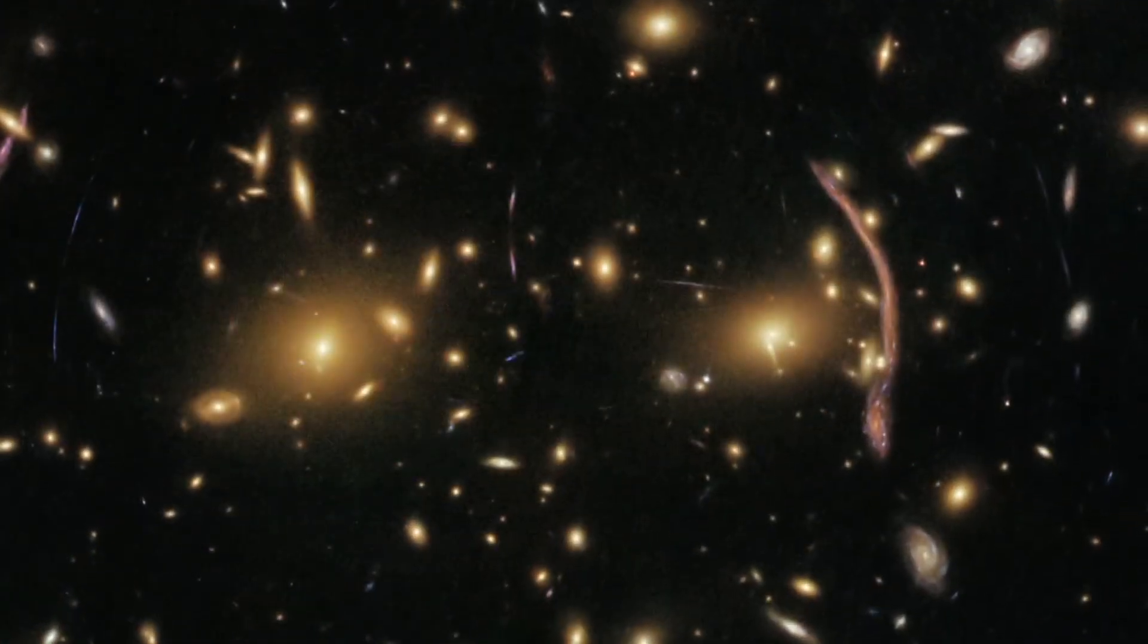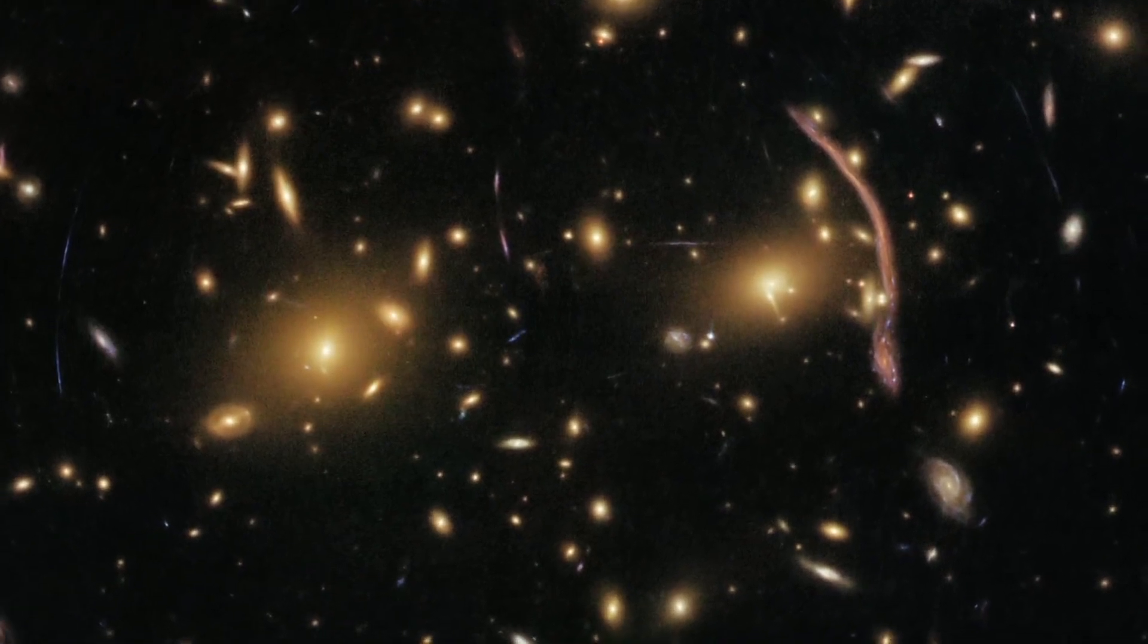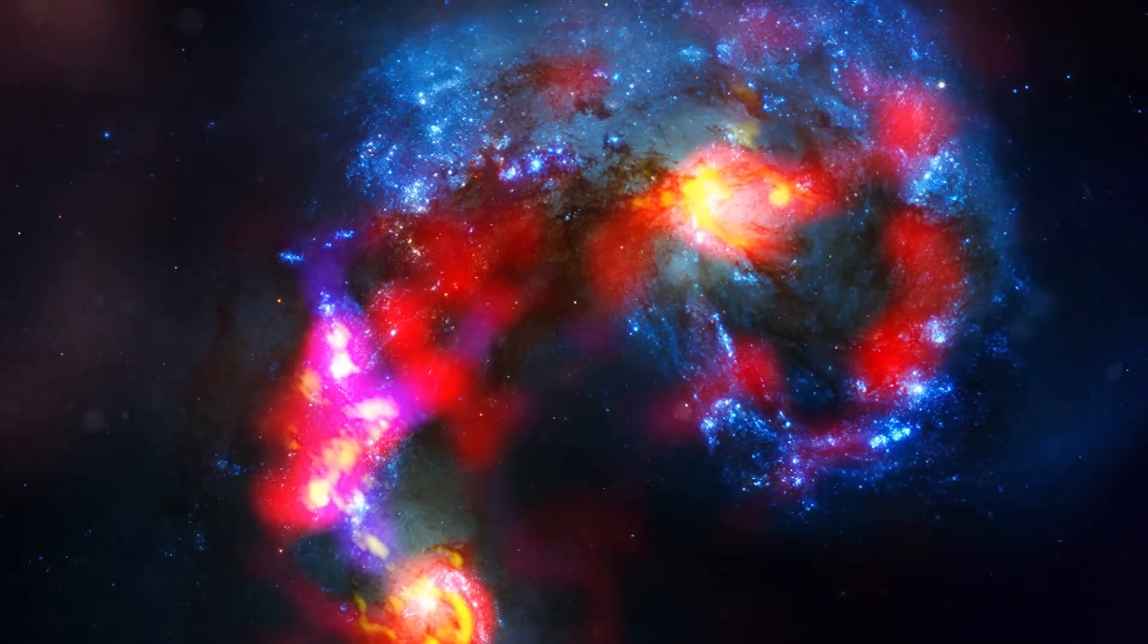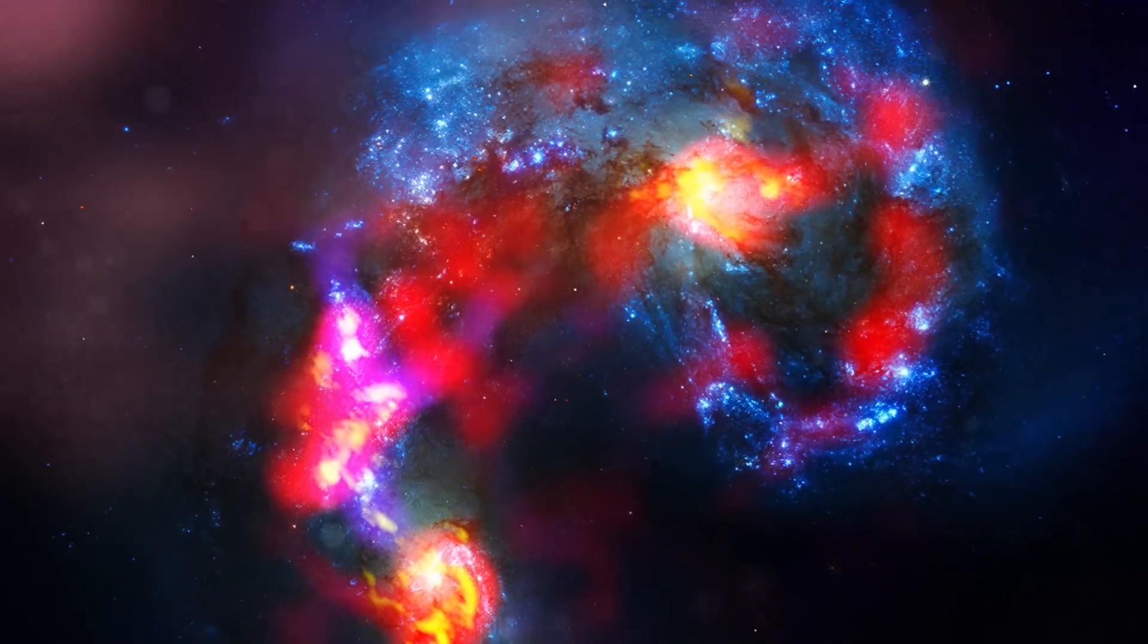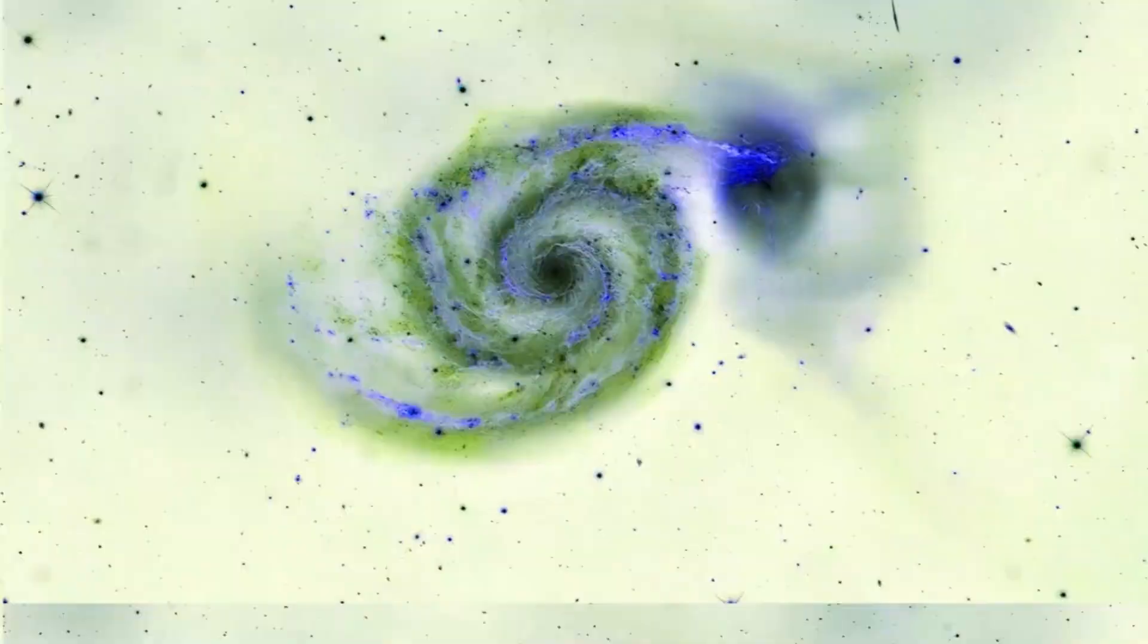These galaxies have a smooth, spherical shape composed mostly of old, red stars. They are rare in the early universe, since at that time, most galaxies were still in the process of star formation and had irregular shapes.